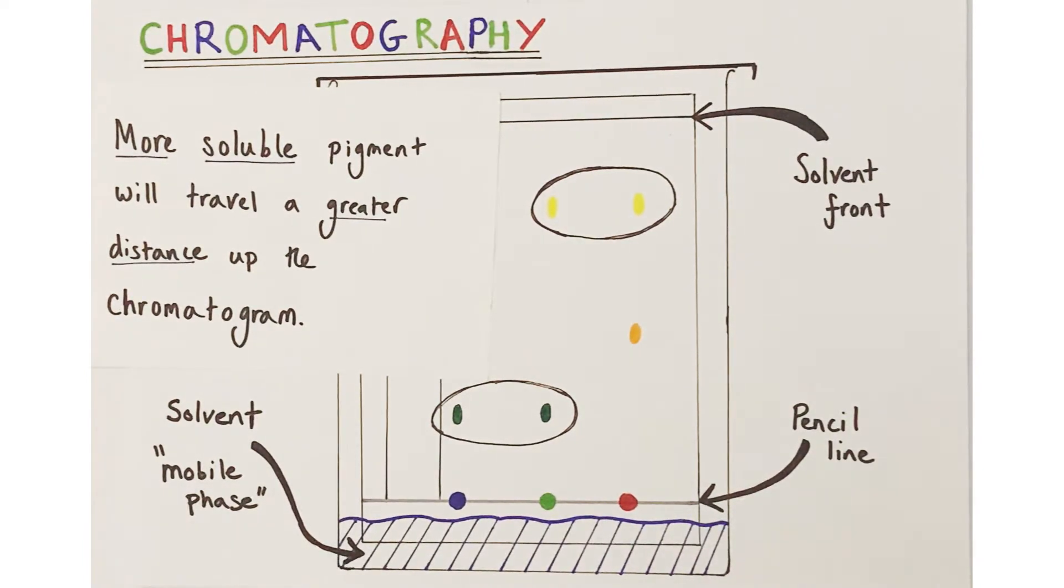Let's take the red dye as our example. It would appear that the orange pigment has traveled a shorter distance than the yellow pigment, and therefore the orange pigment is less soluble in the solvent than the yellow pigment from this red dye.